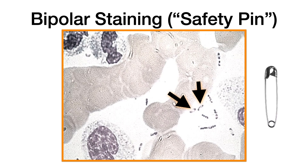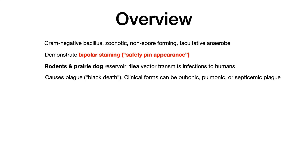So if you see this picture, this is Yersinia. The reservoir and the vector are very high yield for these bacteria. Rodents and prairie dogs are the reservoir, and fleas are the vector. The flea is what transmits the infection to humans. Generally, this bacteria resides in rodents, and it's that flea bite that moves it from the rodents over to humans and causes plague or Black Death.